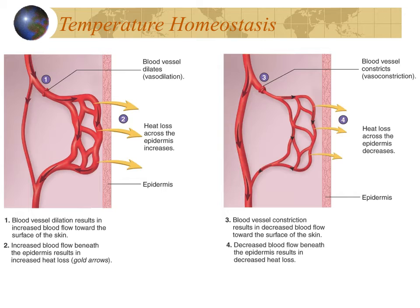The role of the skin in temperature regulation is due to the eccrine sweat glands producing a watery fluid that evaporates from the skin surface, taking a lot of heat with it. The other main way we control temperature loss is by controlling blood flow. When we increase blood flow to the surface of the skin, we increase heat loss; when we want to conserve heat, we reduce blood flow near the surface.